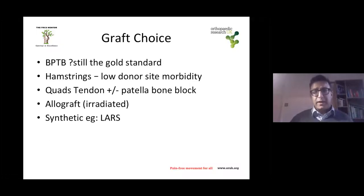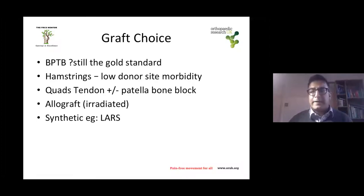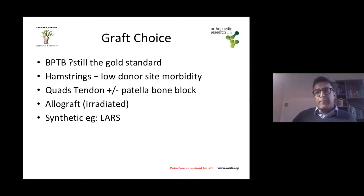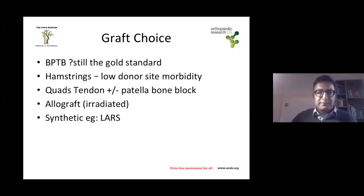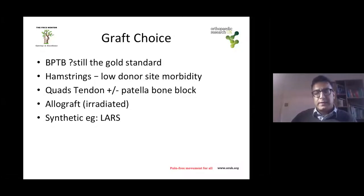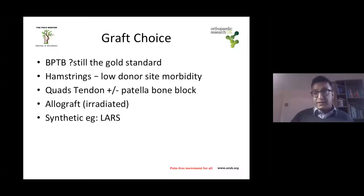Bone-patellar tendon-bone: traditionally the go-to graft, easy to harvest from the front of the knee. Is it still the gold standard? Hamstrings were popular during training with low donor site morbidity, and I would say 90% of ACL reconstructions you'll see will use hamstrings. Quad tendon plus or minus patellar bone block is fairly new and popular with Americans, with minimal harvesting techniques. Other options include allograft — donated cadaveric tendon, tends to be irradiated and slightly weaker — and synthetic grafts, which were popular in Australia in the 90s such as LARS, but there has been a move away from those.